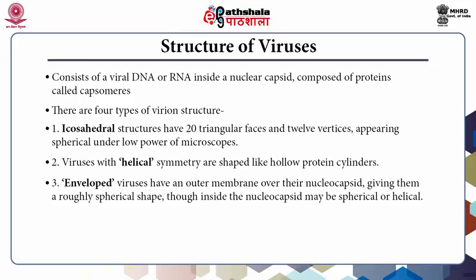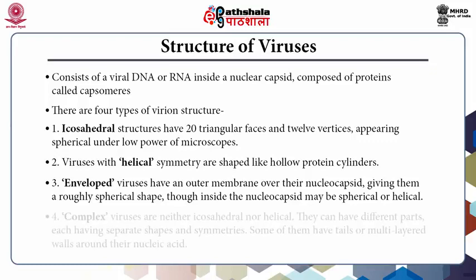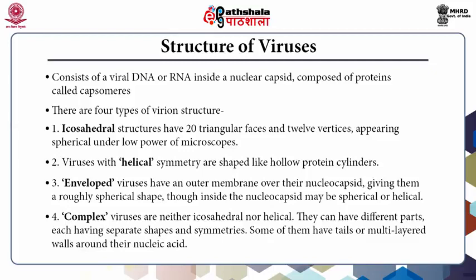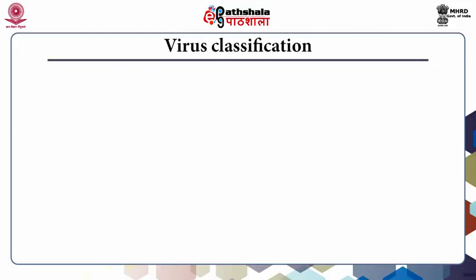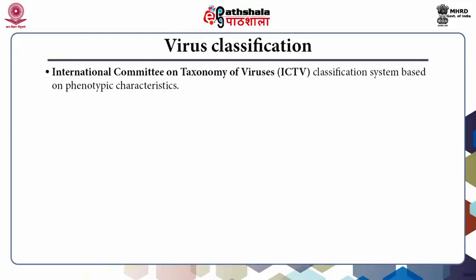Third, enveloped viruses have an outer membrane over their nucleocapsid giving them a roughly spherical shape, though inside the nucleocapsid may be spherical or helical. Lastly, complex structures where viruses are neither icosahedral nor helical — they can have different parts each having separate shapes and symmetries, some with a tail or multi-layered walls around their nucleic acid. For classification, the International Committee on Taxonomy of Viruses system was generated based on phenotypic characteristics.